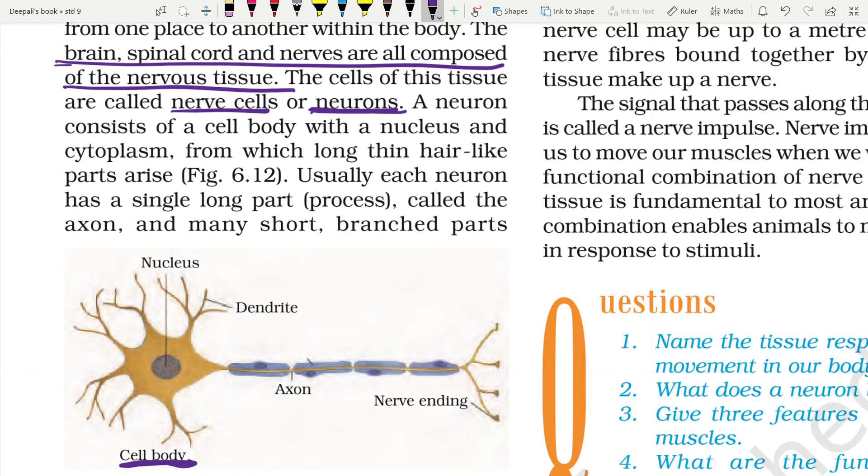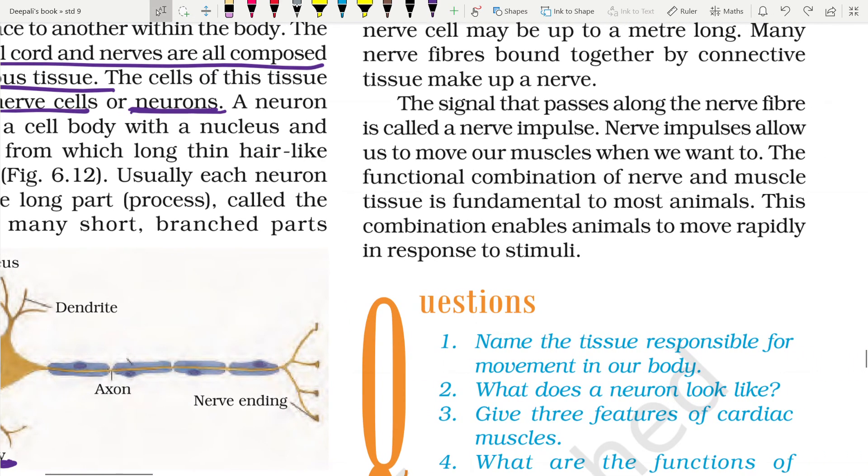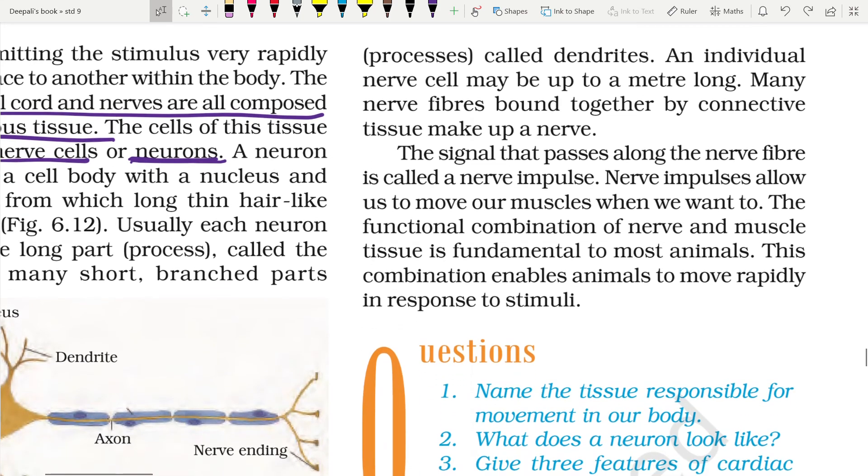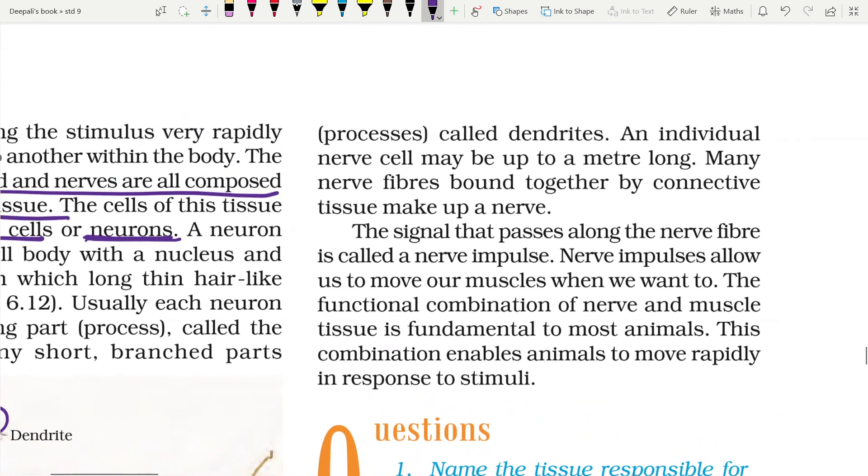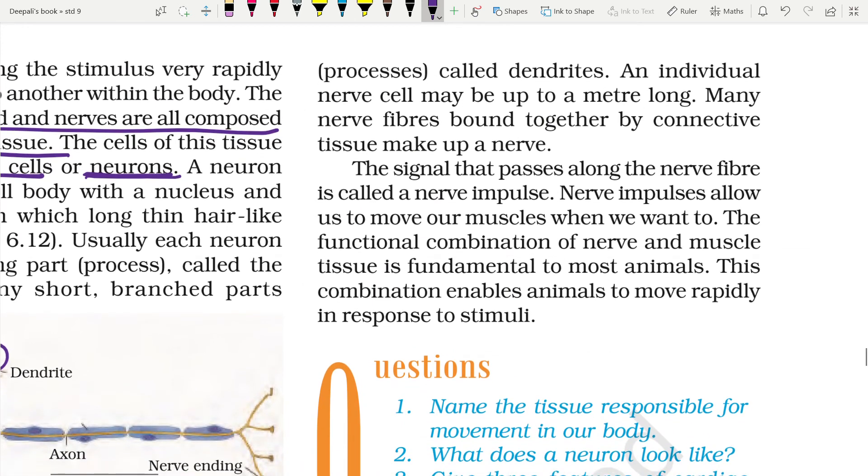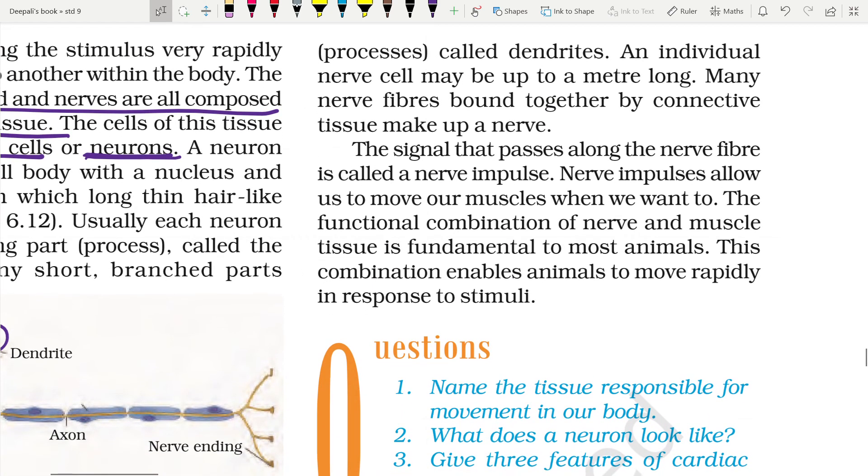From this, a long hair-like part arises. Usually each neuron has a single long process called the axon. That is the yellow line you can see here. And this yellow line has many short branched parts at the end. They are called dendrites. The dendrites are branched structures of the cell body.